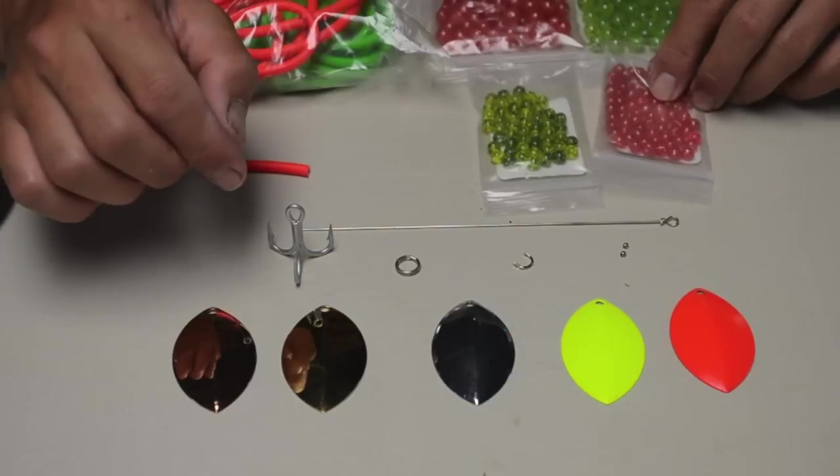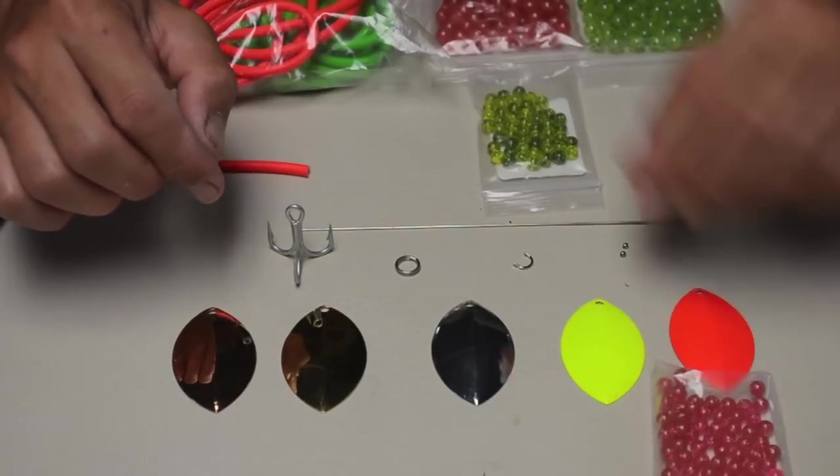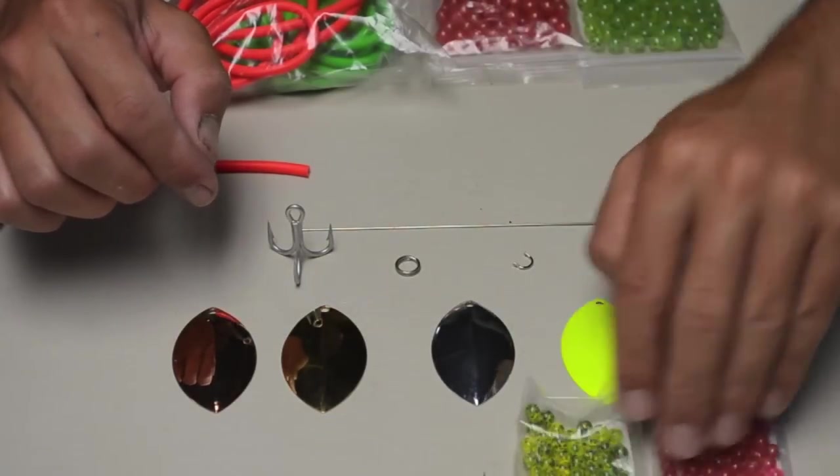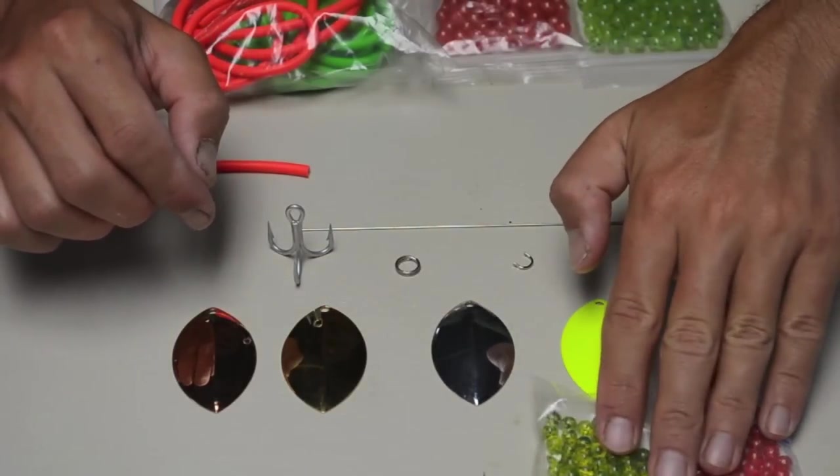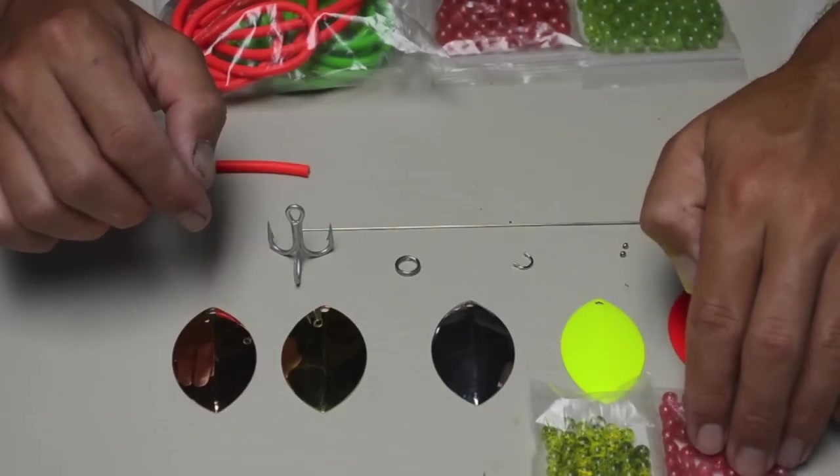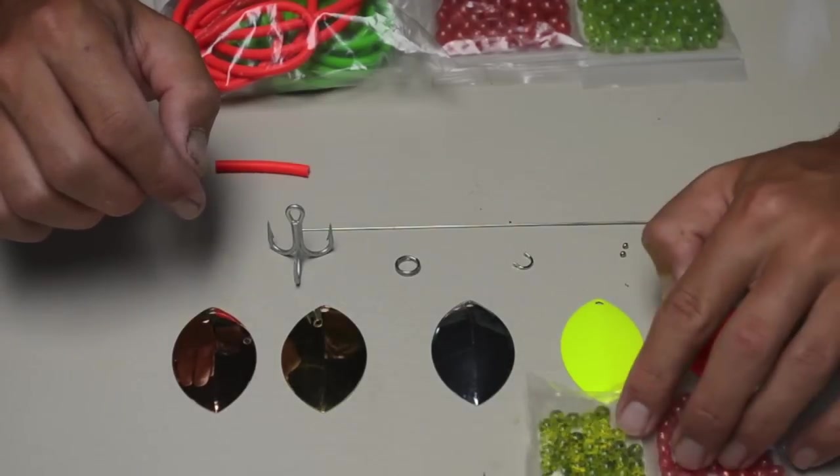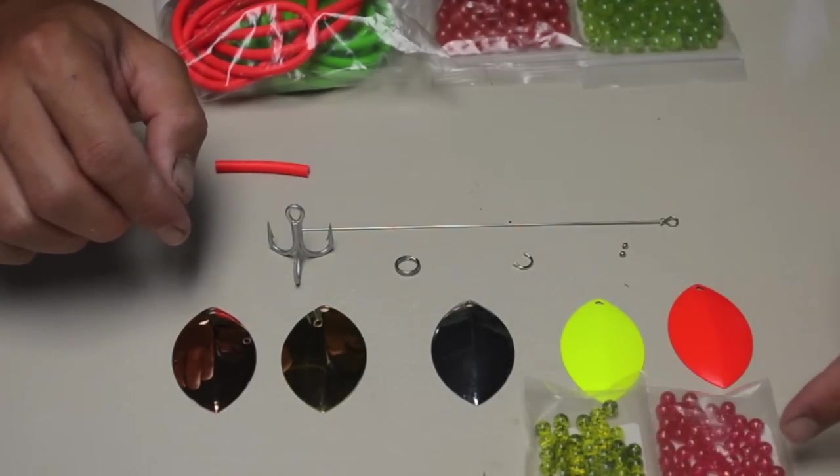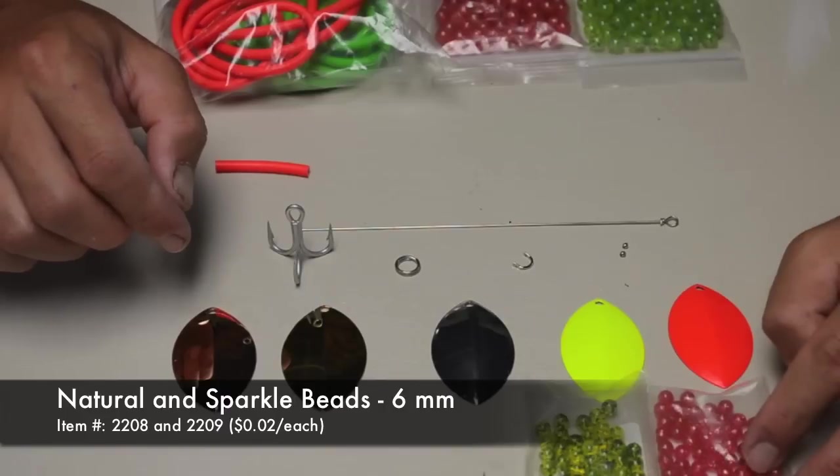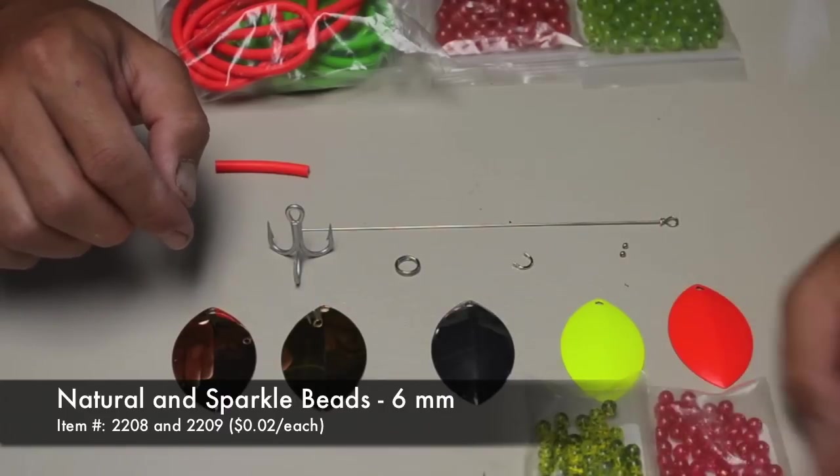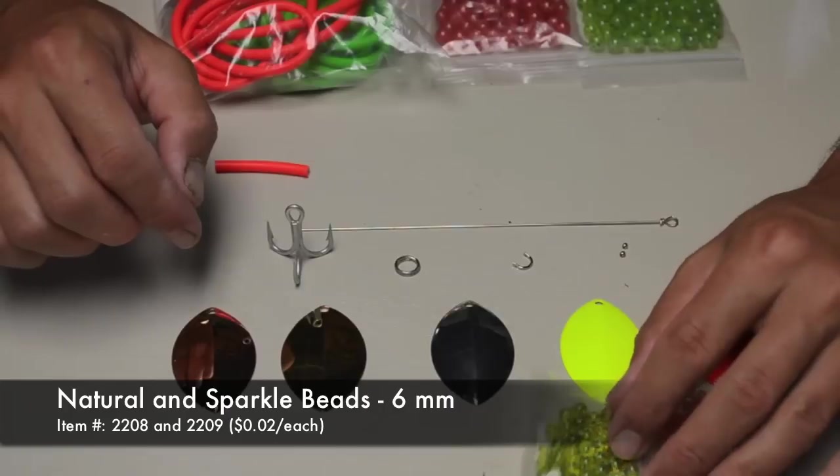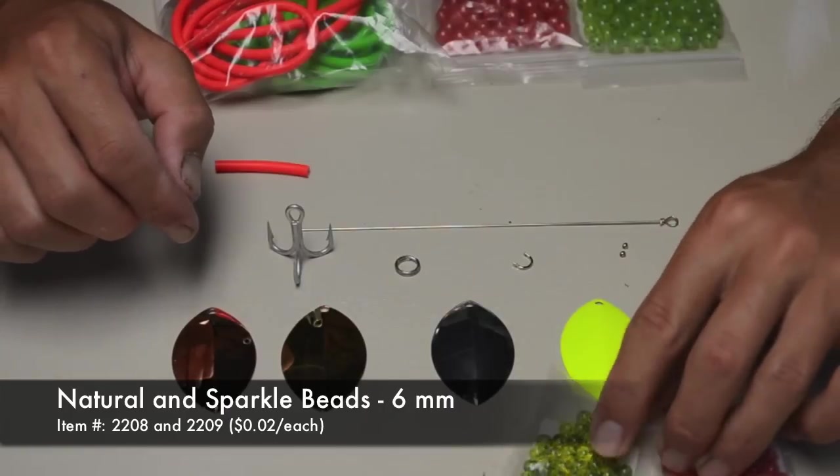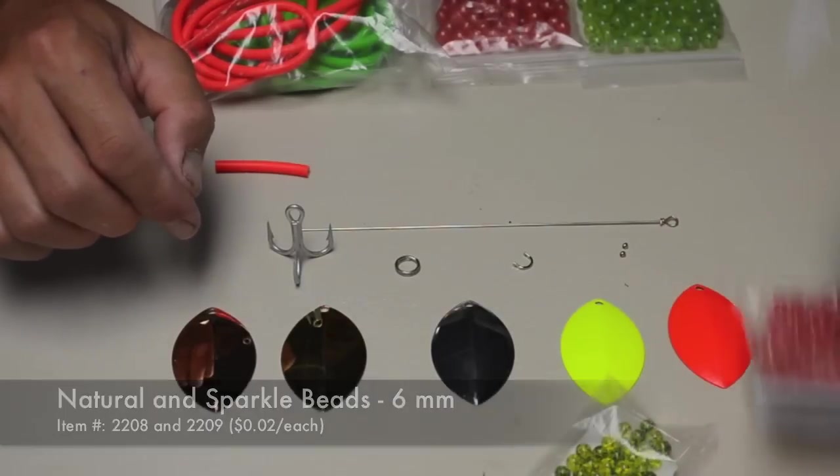Below the clevis I run a series of beads. Initially right below that, I like to run two of these 6mm beads. There's a lot of different beads available online. I like these sparkle beads and natural beads - they have either metallic flakes or this is a chartreuse bead with blue flakes. Those are my favorites.